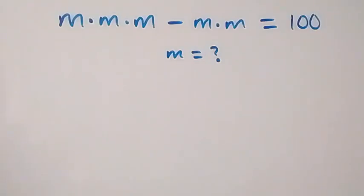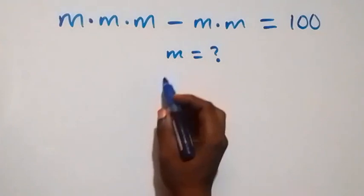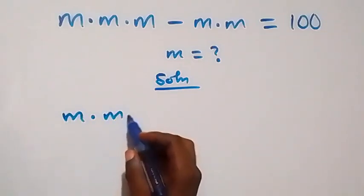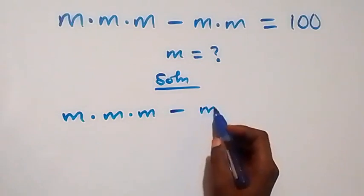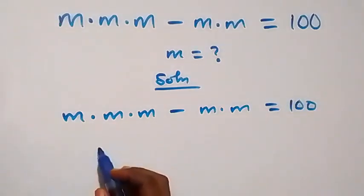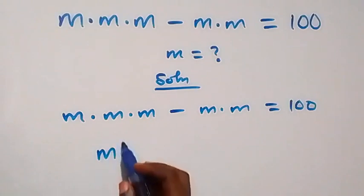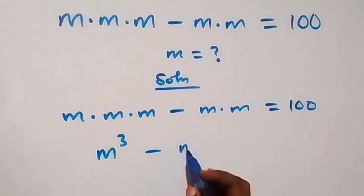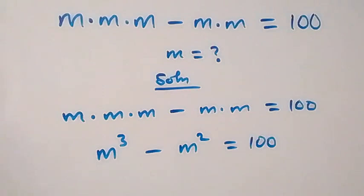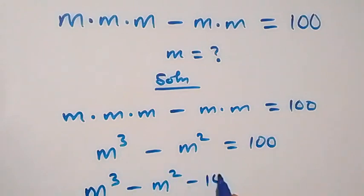Hello, welcome. How to solve this nice algebra problem. What is given: we have m times m times m minus m times m equals 100. We can write this as m raised to power 3 minus m squared equals 100. Rearranging, this becomes m raised to power 3 minus m squared minus 100 equals zero.